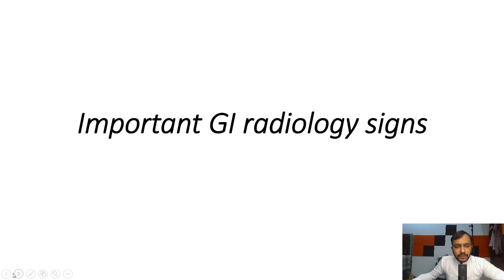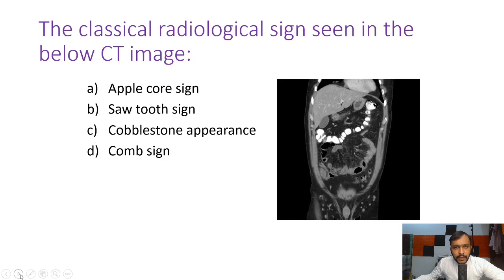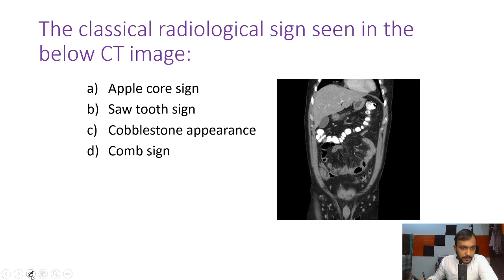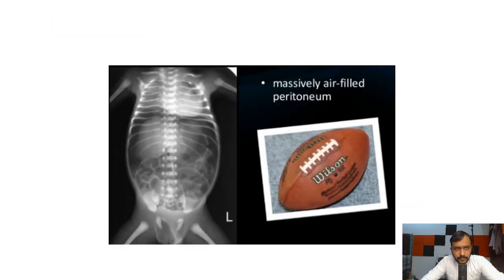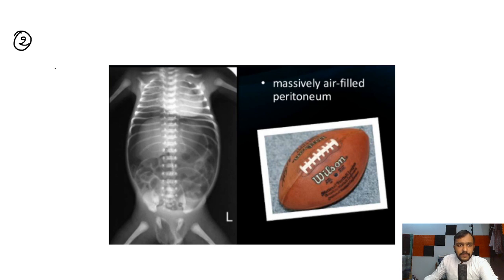First of all I will be showing you 10 images and after that we will discuss them in detail. The classical radiological sign is shown in the image below. You can just take a piece of paper and write down all the answers and then let me know in the comment section how many of them you are getting correct. You can pause the video in between and have more time to look at the image.